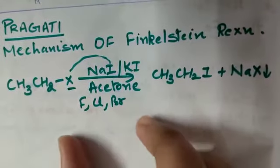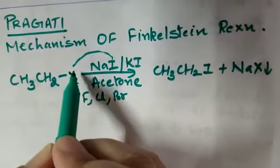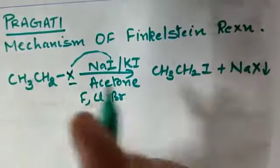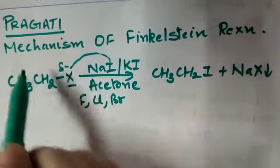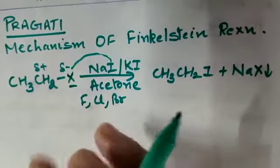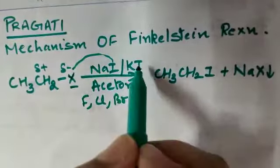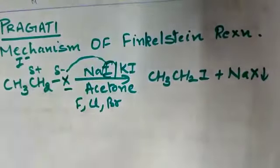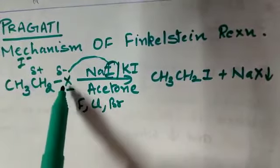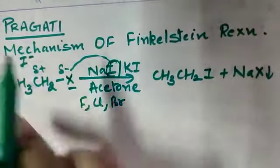So basically what happens here ki X is halogen and more electronegative, so it will acquire partial negative charge and this will acquire partial positive charge. So yahan par jab nucleophile iodine aayega, I minus, toh this X will go and I will come.